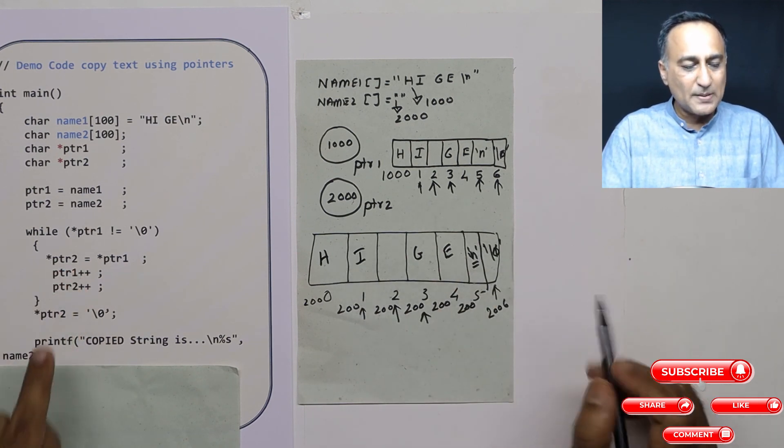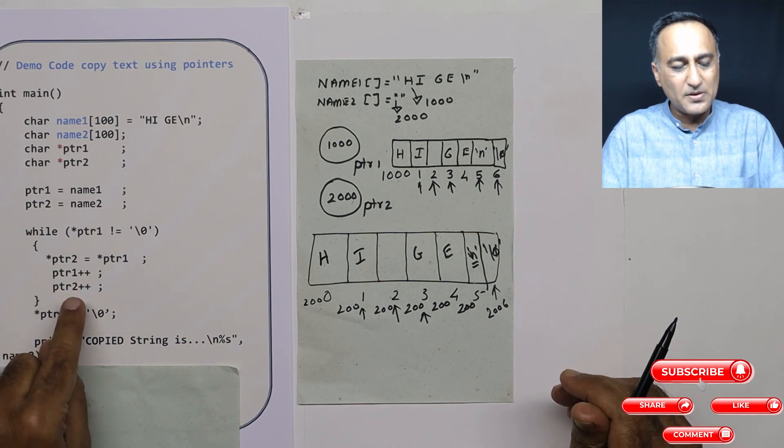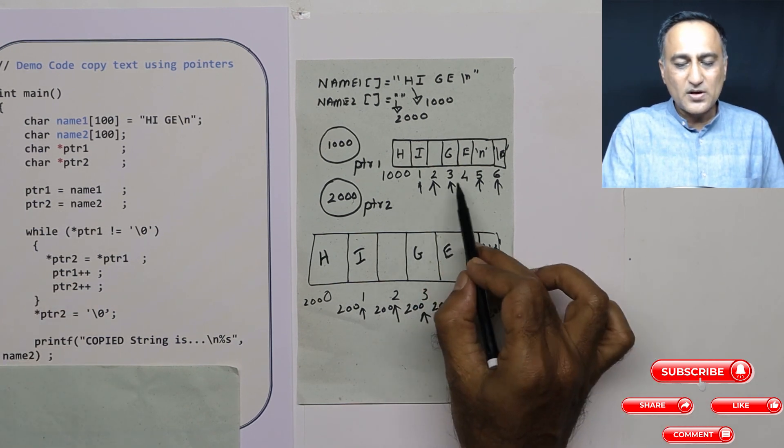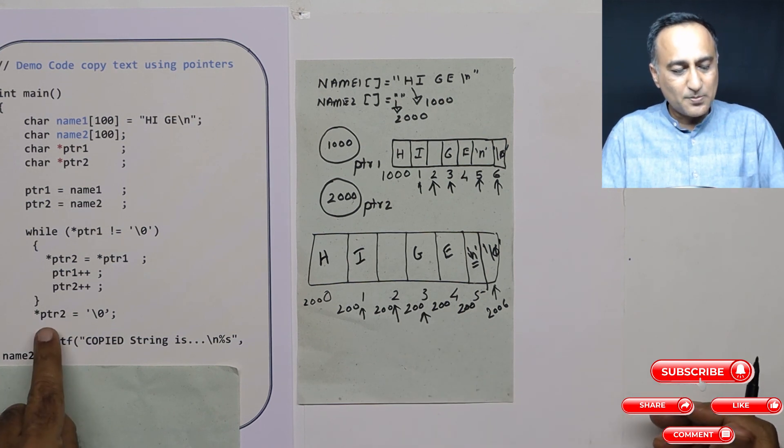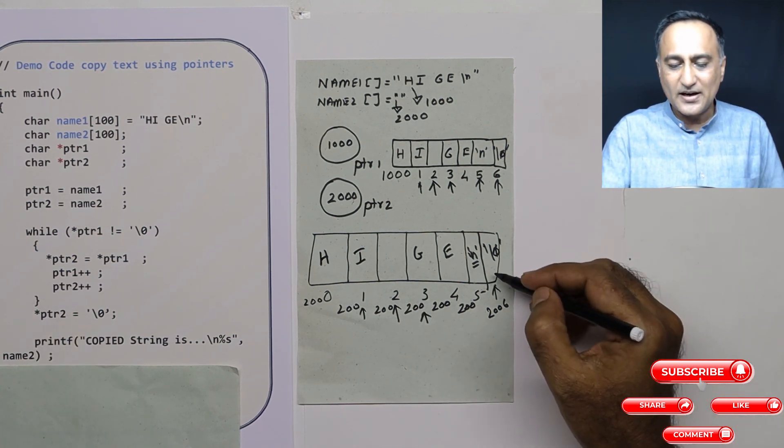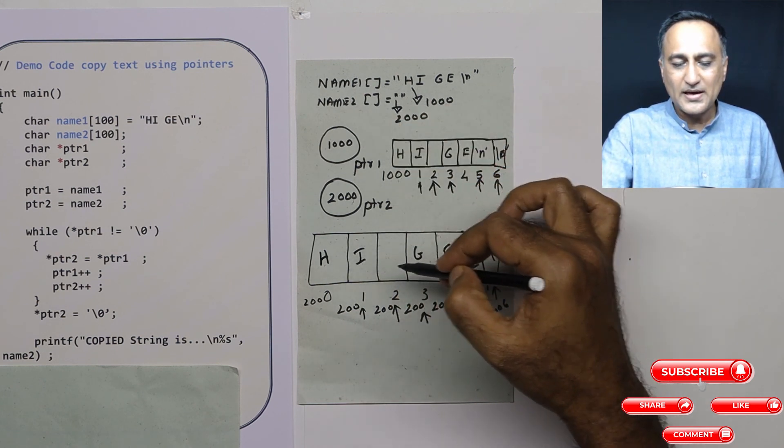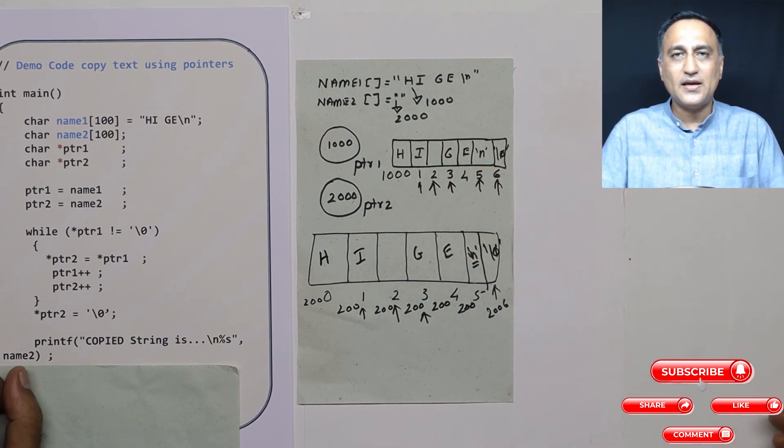So this way the copying happens. When I am increasing ptr1 and ptr2, ptr1 is going to the next location, ptr2 is also going to the next location. Important step is this null character should be added at the end, so automatically name2 is also going to be h, i, space, g, e, backslash n.